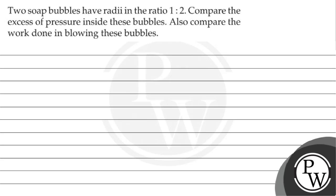Hello, let's see the question. The question says that two soap bubbles have radii in the ratio 1 is to 2. So we can compare the excess of pressure inside these bubbles and also compare the work done in blowing these bubbles.